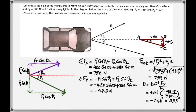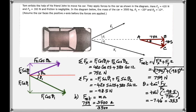We also need to find the acceleration of this car. To find the acceleration, apply Newton's second law: net force equals mass times acceleration. The net force is 759 Newtons, equal to 3500 times A. That gives the acceleration as 0.217 meters per second squared.